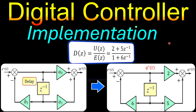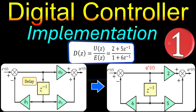Greetings and welcome to a new video. In this video I would like to discuss the digital controller implementation. We have seen in the previous examples the digital controller design using the root locus method. In this case I would like to discuss how we can work out the diagram or the flowchart for this digital controller. I will discuss the first order digital controller and then move on in the next examples with the second order and other orders. This is example number one and we'll see that step by step.